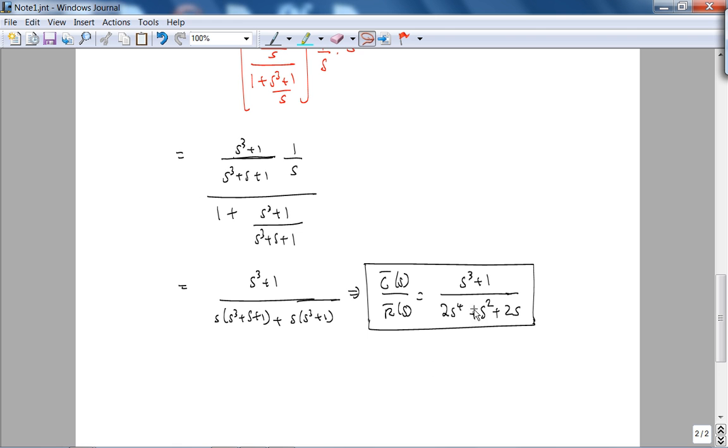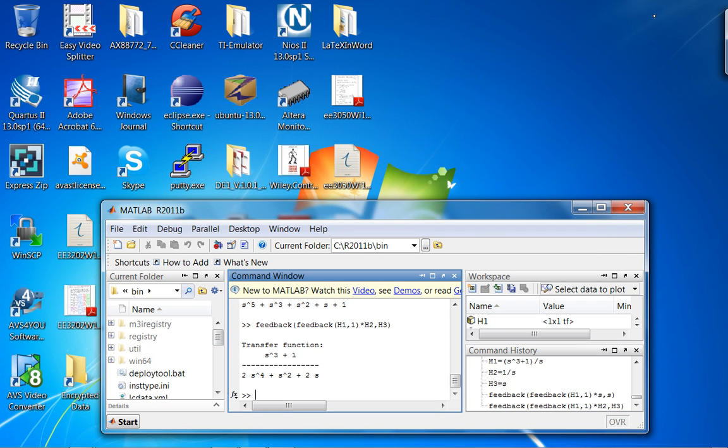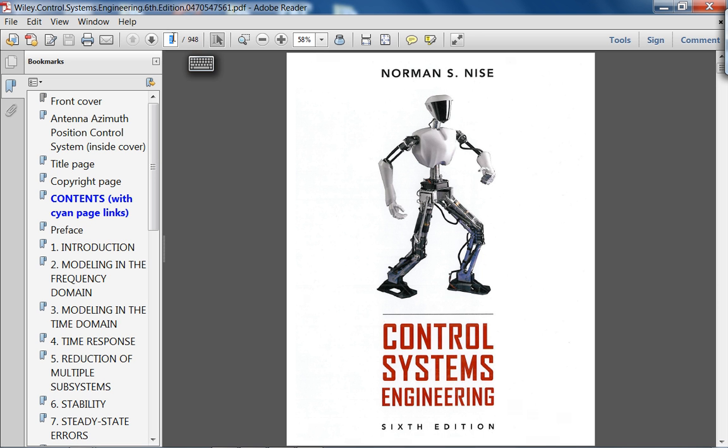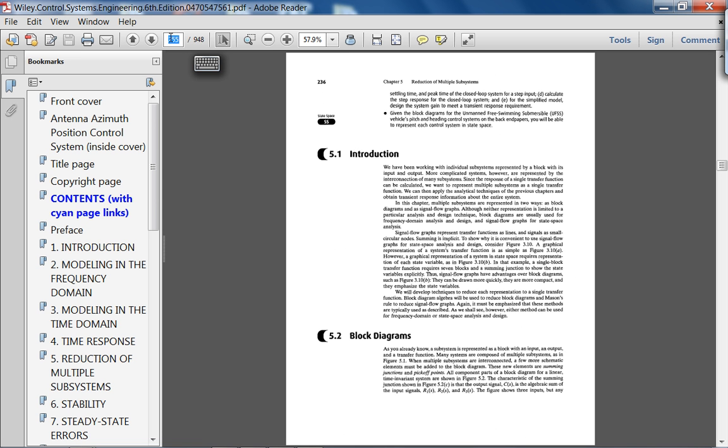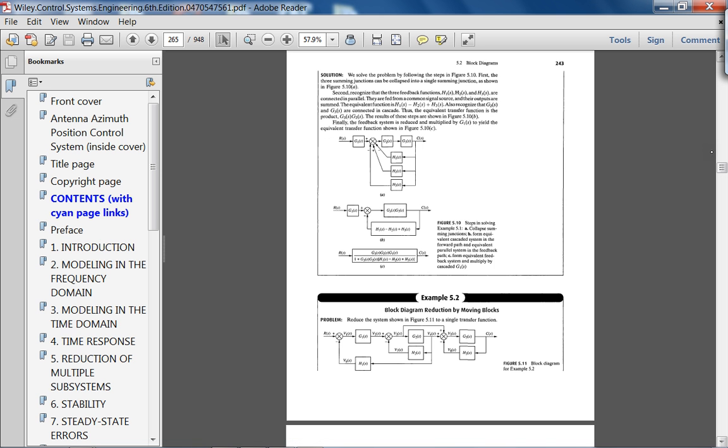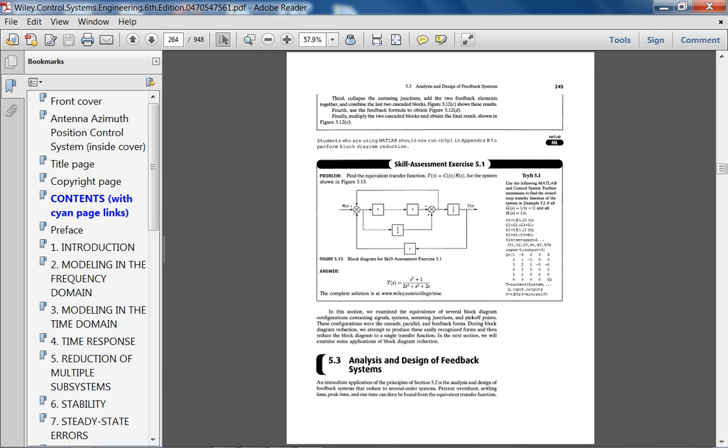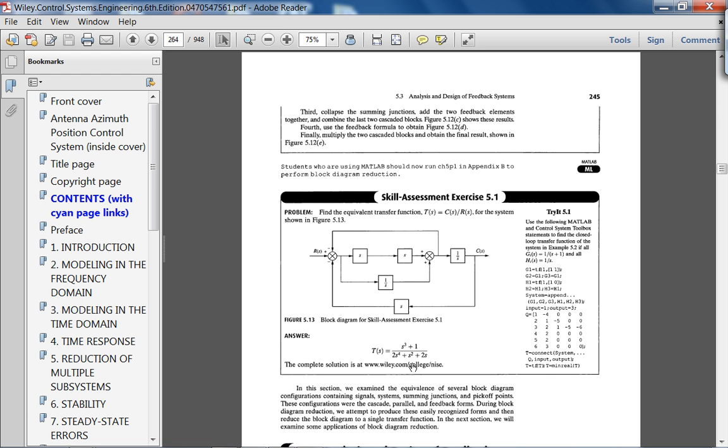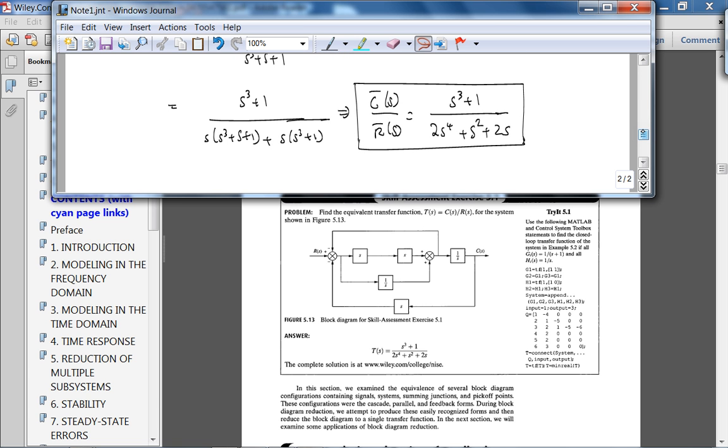So this is the answer we get from MATLAB. Let's say on the exam you made this silly error - if you would even lose any points, it would be like 1% on the problem. So you would get like 99% out of 100. So let's now check the answer in the book. There it is, and you can see. Zoom in - that's what we have, S cubed plus 1, 2S to the 4th. I'll minimize it and check. That is S cubed plus 1 over 2S to the 4th plus S squared plus 2S. Okay, so we're done with that problem.